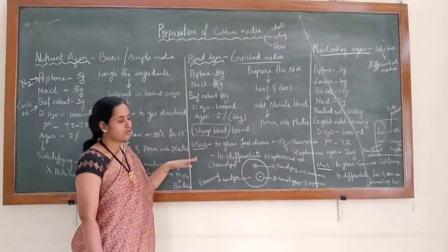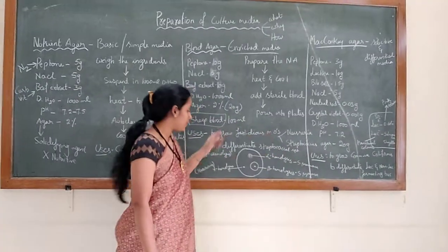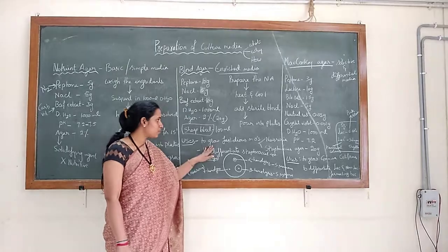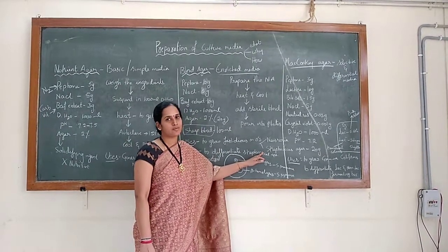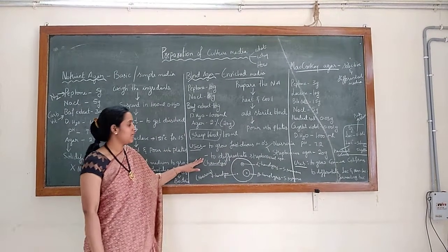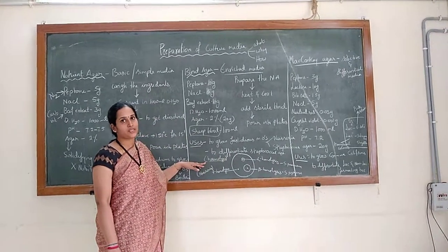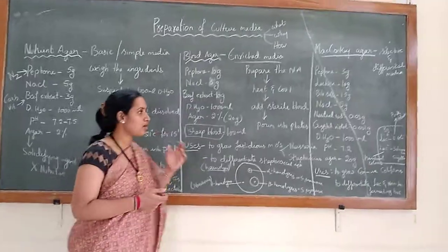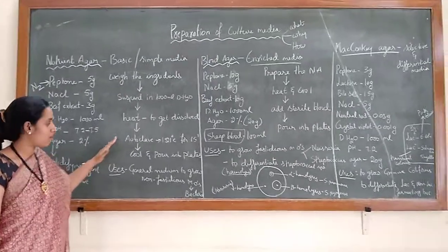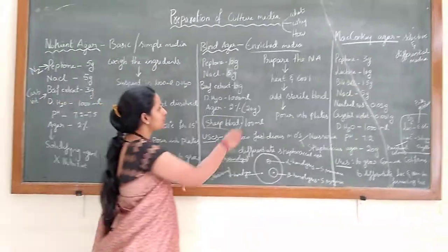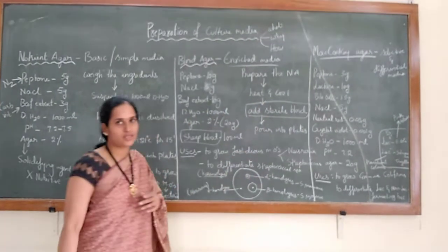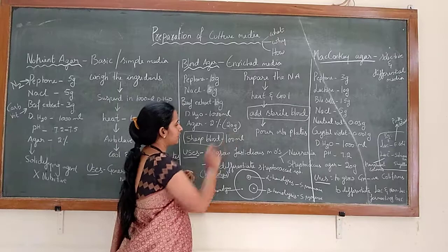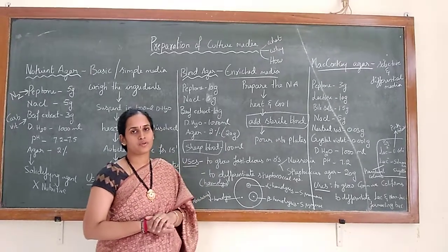Blood agar is also used to differentiate Streptococcus species based on the property of hemolysis. To prepare blood agar, follow the same steps as nutrient agar, but after cooling to around 50°C post-sterilization, add 5% sterile blood to the prepared medium. After mixing, pour the medium into the plates.